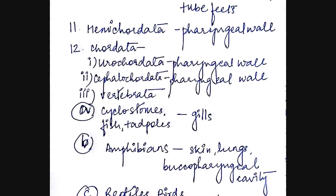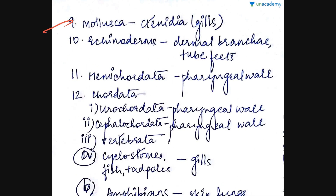Now coming to the mollusca. The mollusca, for example the unio and the patella, mainly respire through gills which are known as ctenidia. And the patella respires through one pulmonary sac, also known as a lung, which forms its respiratory organ.